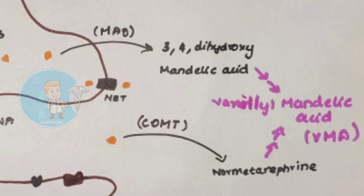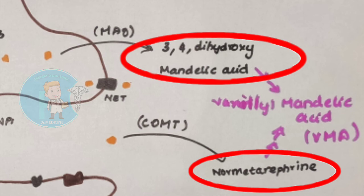This MAO metabolizes the noradrenaline into 3,4-dihydroxy-mandelic acid. Now our body has two metabolites: one is Normetanephrine, and the other is 3,4-dihydroxy-mandelic acid. Through two more reactions, our body will excrete these in the urine in the form of Vanillyl-Mandelic Acid, that is VMA. This is the synthesis, release, metabolism, and excretion of catecholamines.